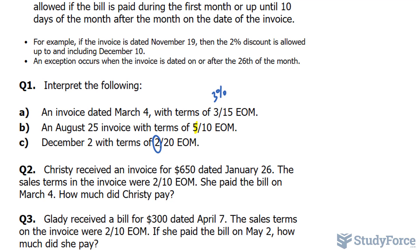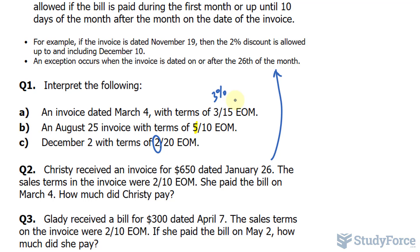In question number 2, we're asked: Christy received an invoice of $650 dated January 26. The exception here comes into play. The sales terms in the invoice were 2-10 EOM. She paid the bill on March 4. How much did Christy pay? According to this exception, when the invoice is dated on or after the 26th of the month, you don't have to pay until the month after that.